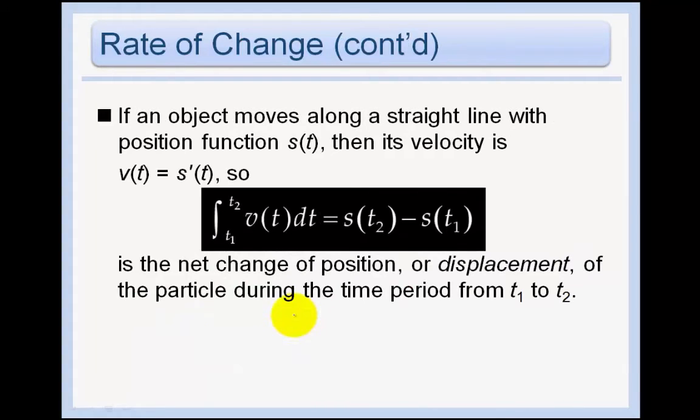Similarly, if an object moves along a straight line with a position function s(t), then its velocity is v(t), which is the derivative s prime of t. And so if you're taking the antiderivative of the velocity function, well, you know the antiderivative of the velocity is the position function, and you need to evaluate that between t1 and t2. So you get s(t2) minus s(t1). In other words, the displacement of the particle from time 1 to time 2.